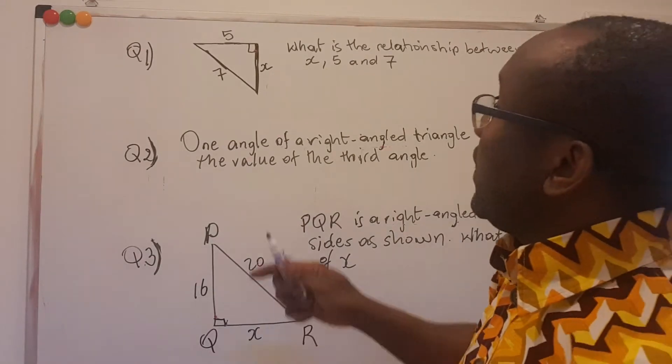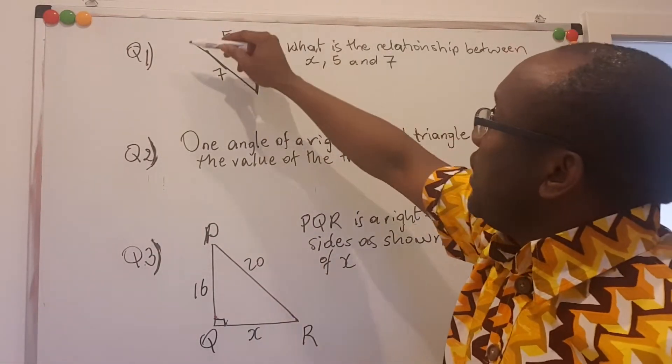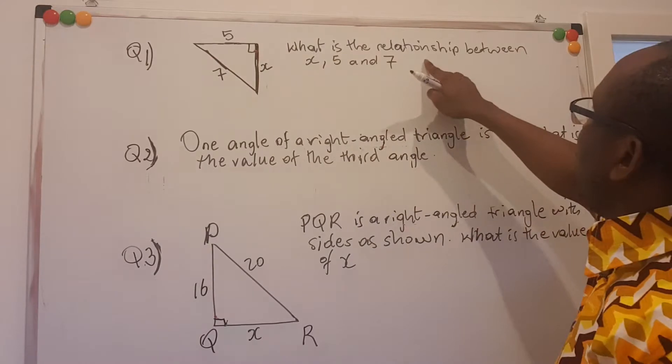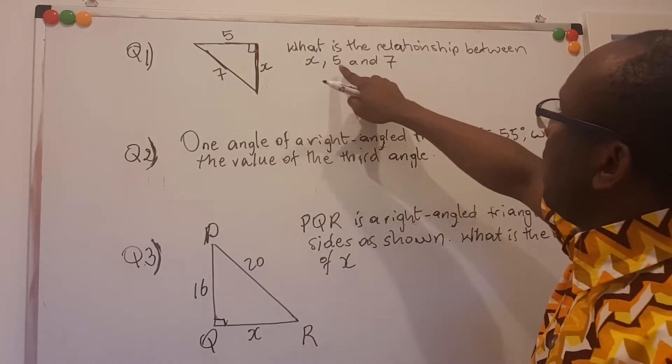Today we look at three Ordinary Level Paper 1 questions on the topic around geometry. So the first question says, given this figure you see here, what is the relationship between X, 5 and 7?